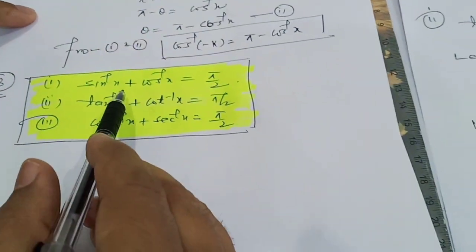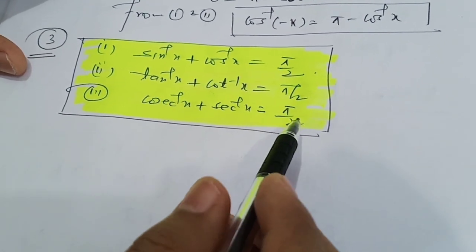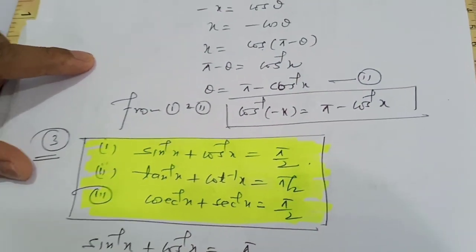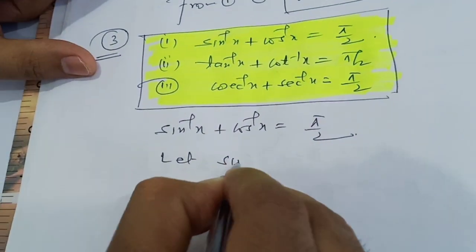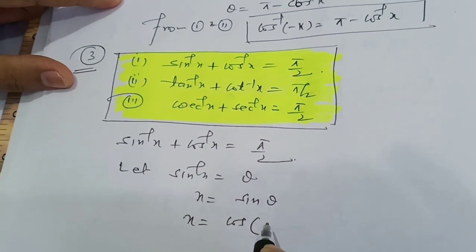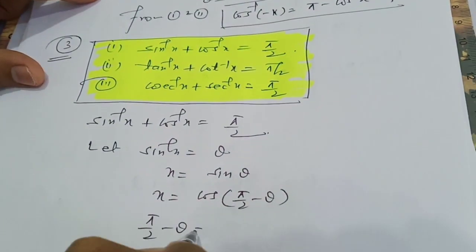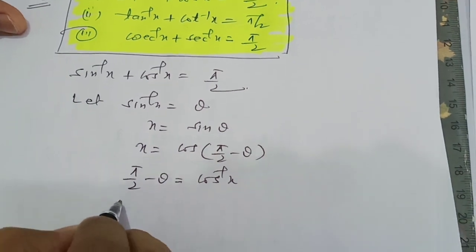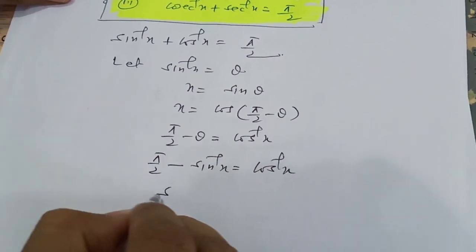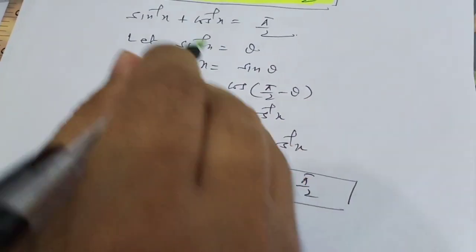The third property is: sin⁻¹(x) + cos⁻¹(x) = π/2, tan⁻¹(x) + cot⁻¹(x) = π/2, and cosec⁻¹(x) + sec⁻¹(x) = π/2. To verify: let sin⁻¹(x) = θ, so x = sin θ = cos(π/2 - θ). Therefore cos⁻¹(x) = π/2 - θ, and adding: sin⁻¹(x) + cos⁻¹(x) = θ + (π/2 - θ) = π/2. The other two can be proven similarly.